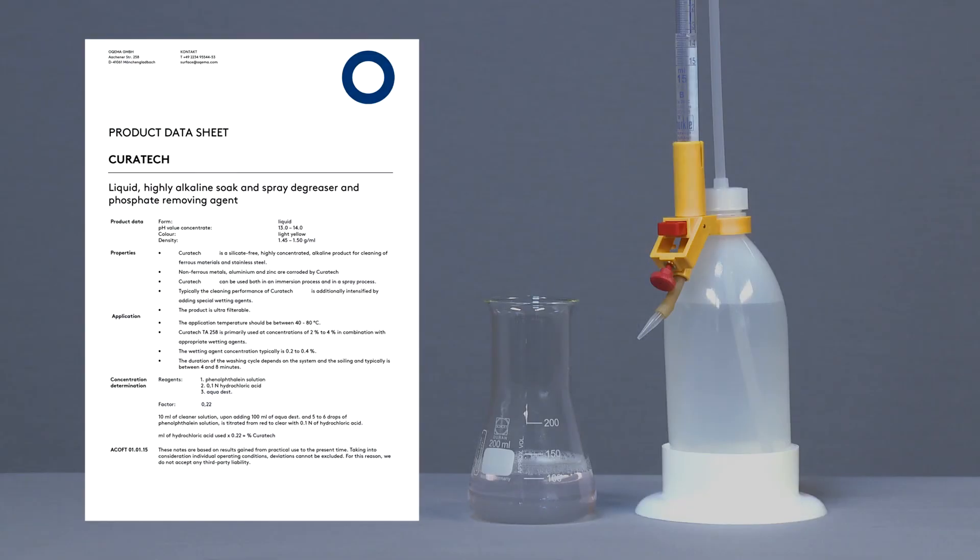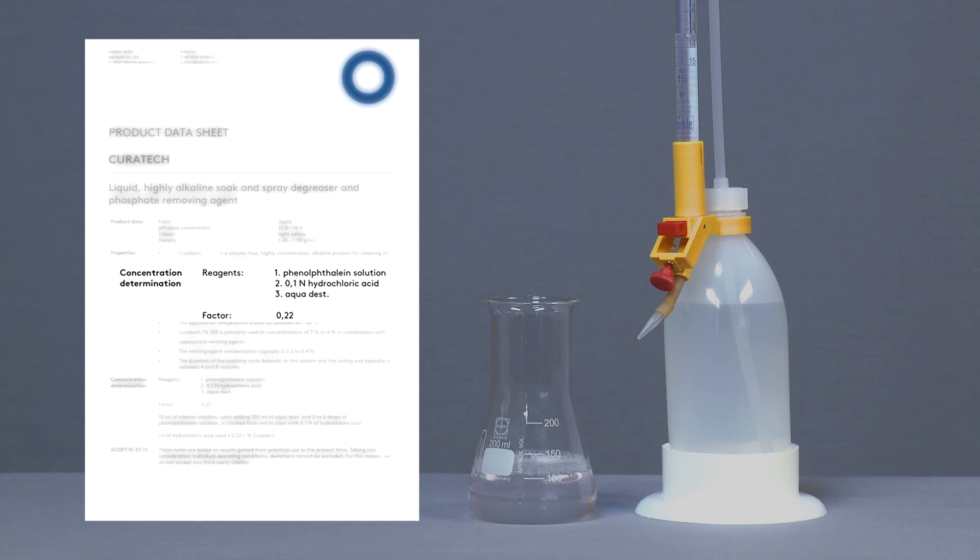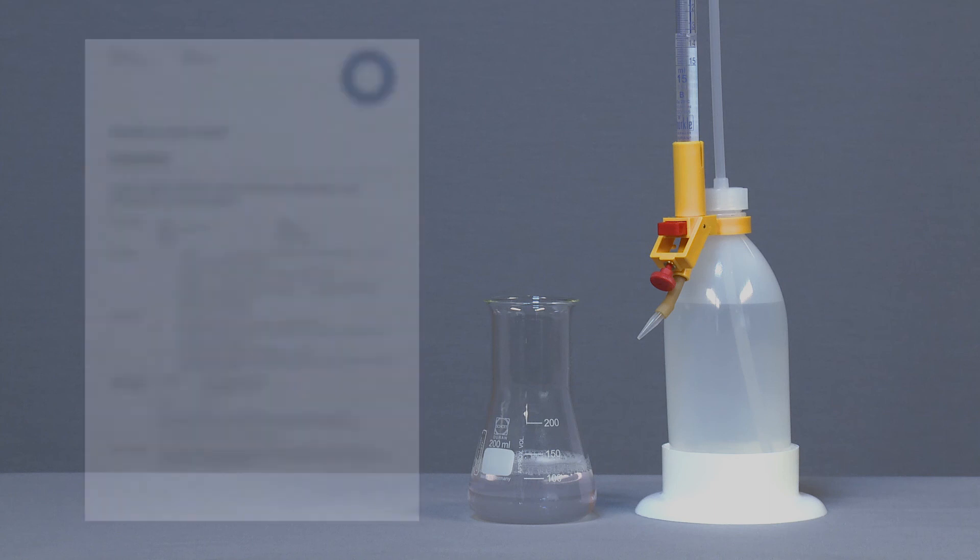Read off the consumed volume of the titration solution. In the last step, refer to the product datasheet. In addition to all important information about the use of the product, you can find the corresponding factor for concentration determination on there. Multiply the consumed amount of the titration solution in milliliters with the stated factor.